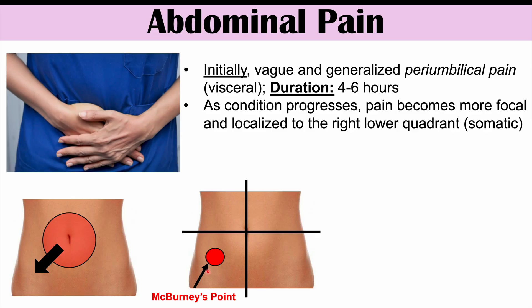Clinicians will often find McBurney's point by locating what we call the anterior superior iliac spine — the prominent top portion of the hip bone that you can actually feel and palpate. The clinician will draw an imaginary line from that point to the umbilicus, and McBurney's point will be one third of the way from the anterior superior iliac spine to the umbilicus. This is how they can determine the location of the appendix.